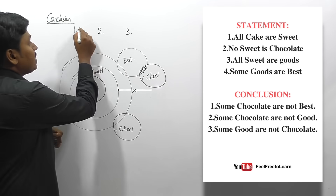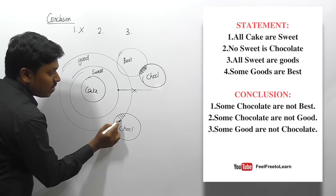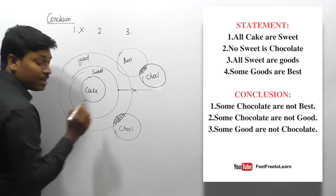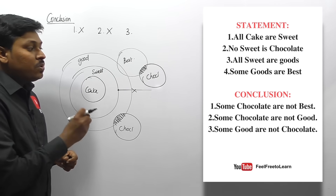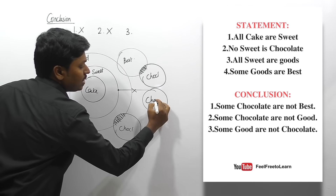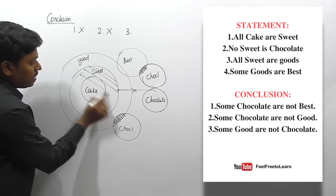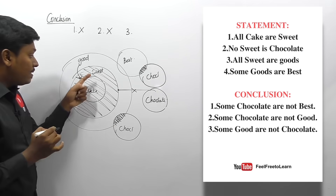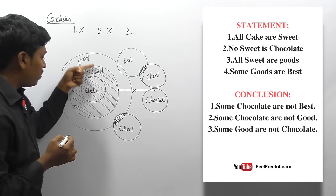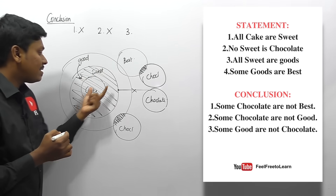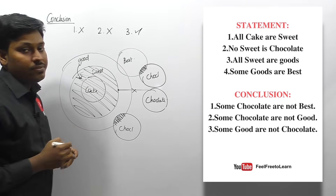Since some chocolates can be best, but the conclusion says some chocolates are not best, conclusion one does not follow. Conclusion two: 'some chocolates are not good.' Some chocolates can be good — we can draw chocolate connected to good. But the conclusion says some chocolates are not good, so conclusion two also does not follow.